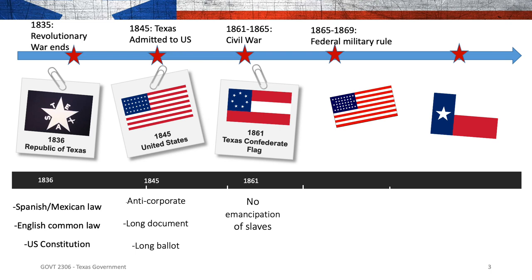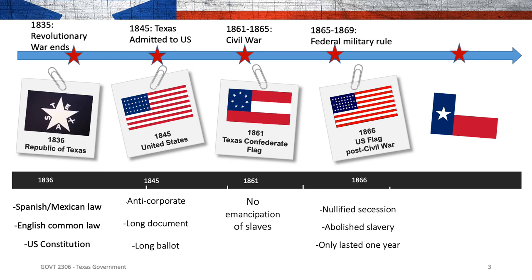The Civil War ended in 1865. During Reconstruction, the North had to make sure the South did not go straight back to slavery. In 1866, there was a new constitution that nullified secession — basically taking back the withdrawal from the United States. It abolished slavery, which was directly opposite of the constitution before it, and it only lasted one year.